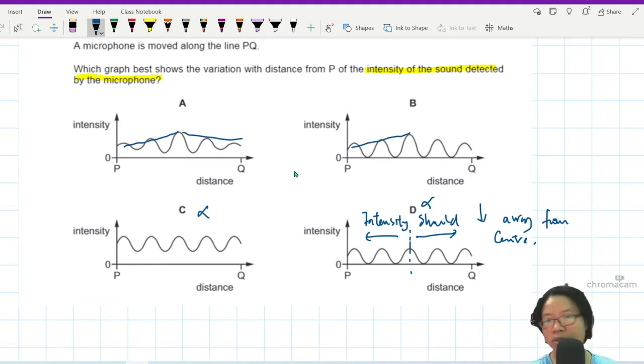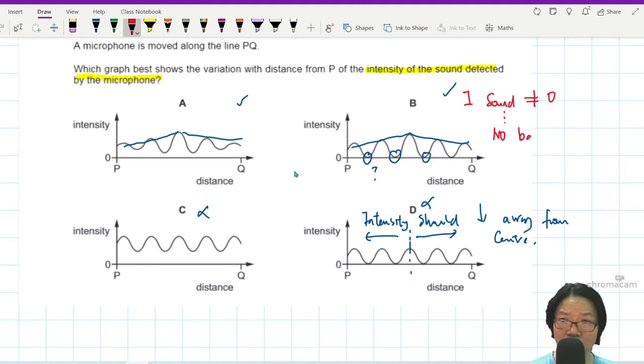But the next question will be: will the intensity drop to zero? Is this possible? The answer is no. Intensity will never drop to zero. Because this is sound. The intensity of sound cannot be zero. Because zero means there is no background noise at all. How is it possible?